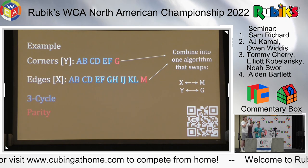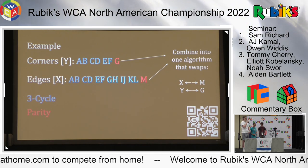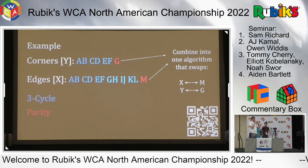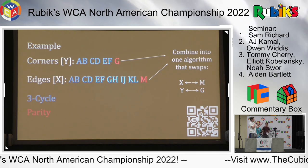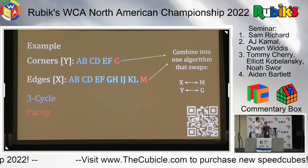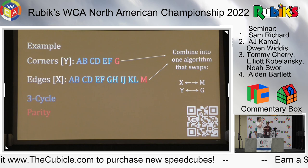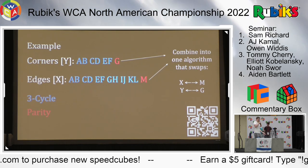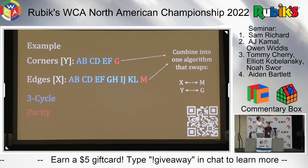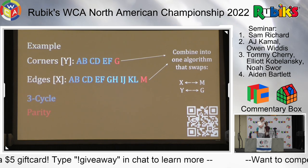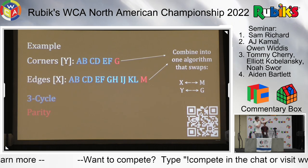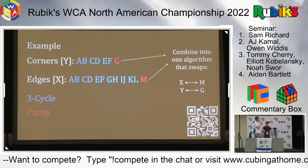How we define parity in 3x3 blindfolded is different from something like OLL parity on 4x4. When we trace with an odd number of targets, if we have an odd number of edge targets we'll always also have an odd number of corner targets, because of how the cube works. Normally with an even amount of targets we split them into pairs and solve each with three cycles. With this parity target we can't use normal three cycles, so we combine our corner buffer with the last corner target, and the edge buffer with the last edge target, into one algorithm.